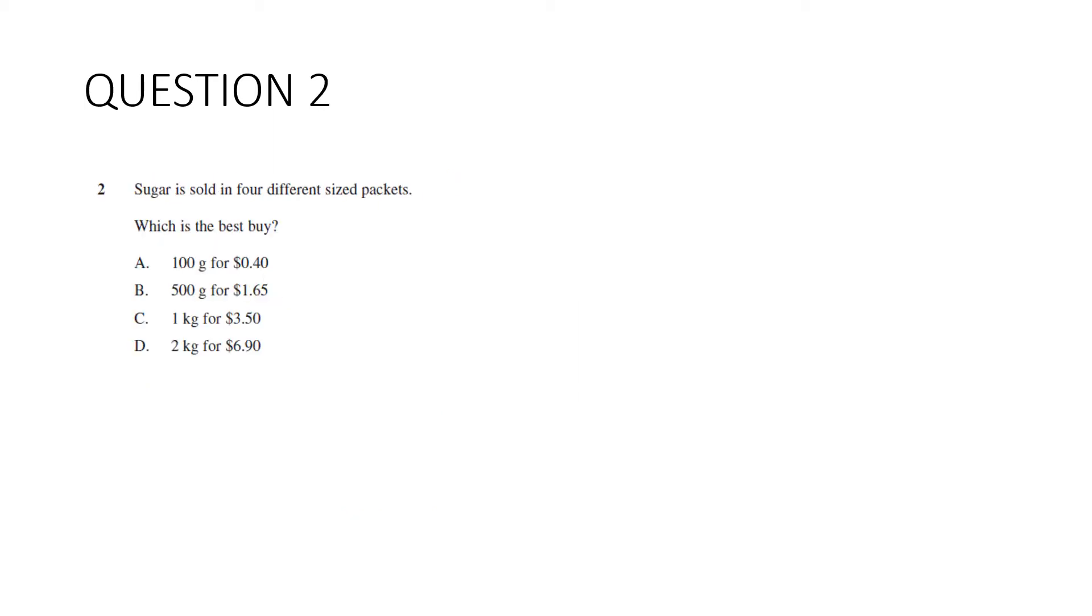Question 2. Sugar is sold in 4 different sized packets, which is the best buy? So what we've got to do is compare each of these. And I'm just going to pick the first two and compare those and then knock one out. So this is 100g and this one's 500g, so I'm going to multiply A by 5 to make it an equivalent weight. So 0.4 times 5 is $2. $2, $1.65. B is cheaper, so we can eliminate A.